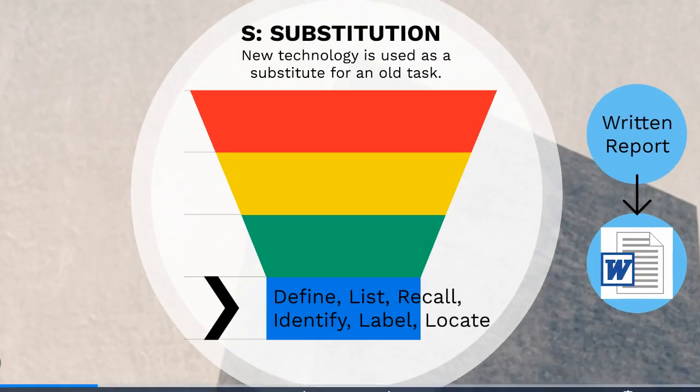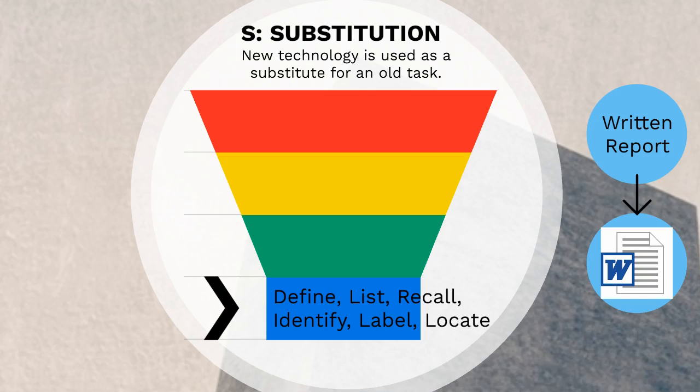Substitution is when a teacher replaces what is already used within the classroom with technology that offers the same exact function. The technology is used to perform a basic task that was done before technology was integrated. For example, instead of writing a report with paper and pencil, Microsoft Word is used.